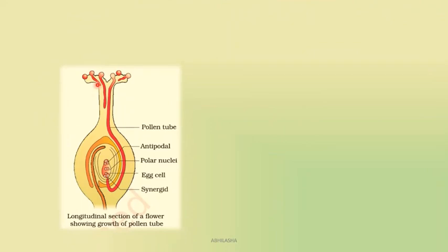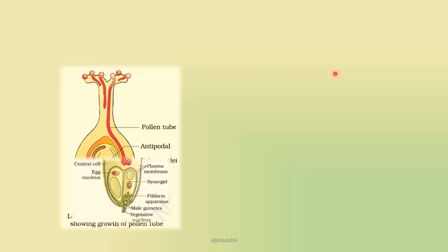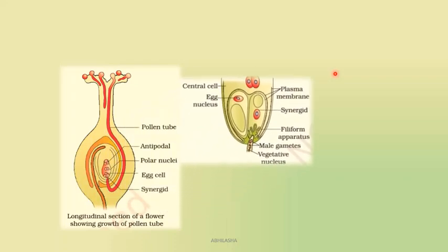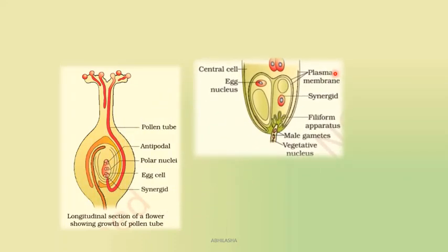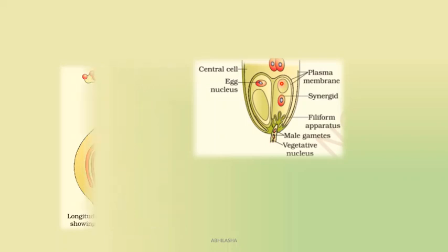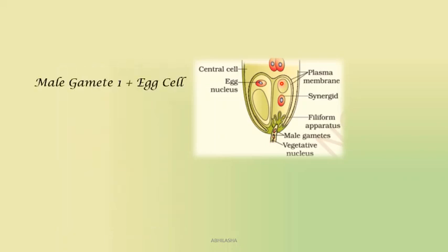You can see the pollen tube reaching the micropyle. The two male gametes in the pollen are released into the ovule. The micropylar end has the egg apparatus with the egg cell or the female gamete and the two synergids. So the male gametes are released into the cytoplasm of one of the synergids. Then one of these male gametes fuses with the egg cell to form the zygote — this is known as syngamy.